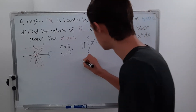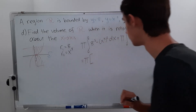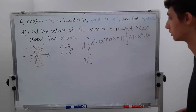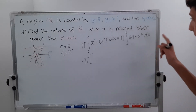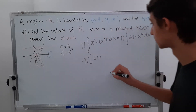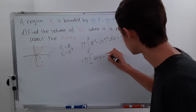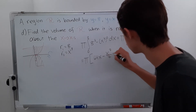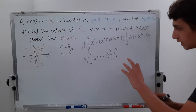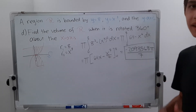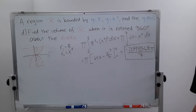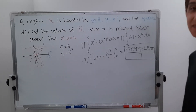Now we solve it. Taking pi out as a constant: 64 integrates to 64x, and x to the sixth becomes x to the seventh over 7, evaluated from 0 to 2. The answer to this comes out to be negative 2,093,568 pi divided by 7. That's a pretty large number.